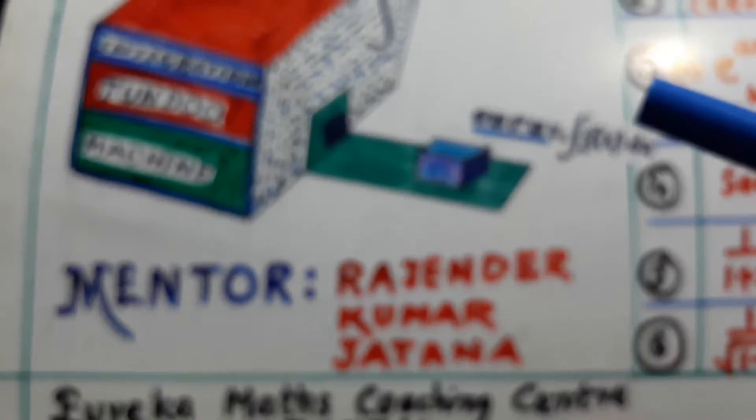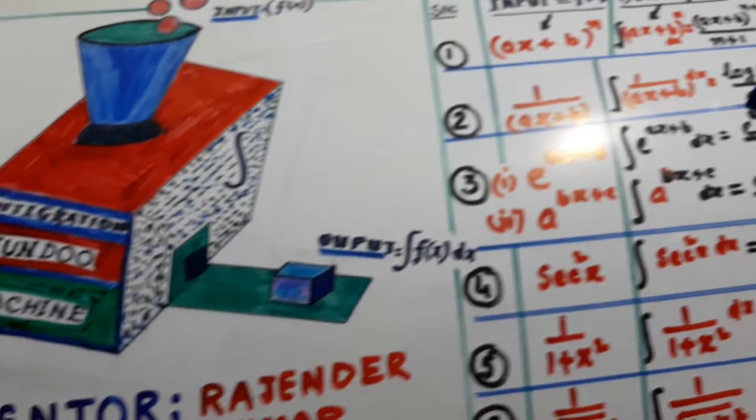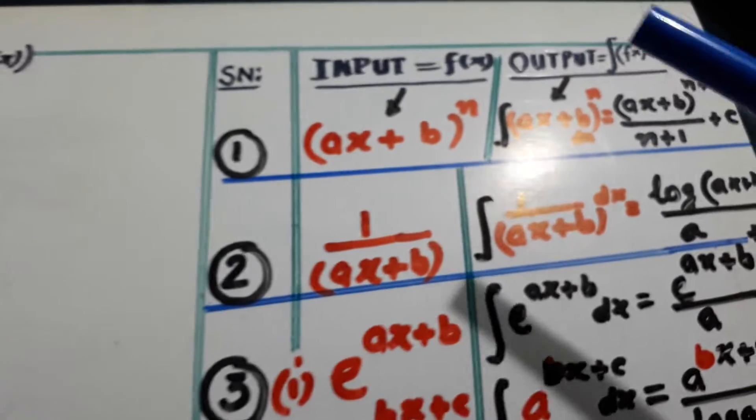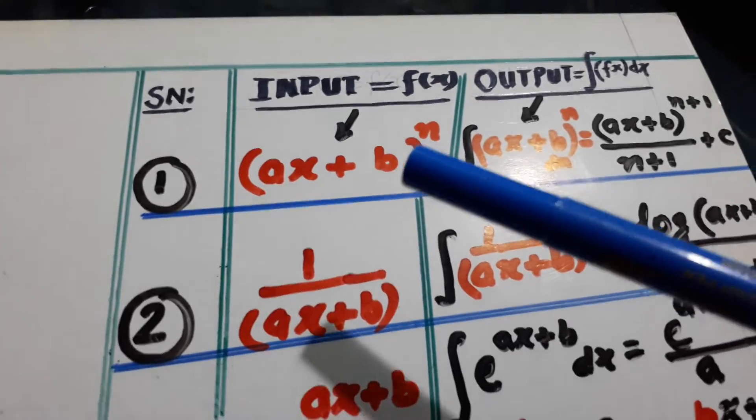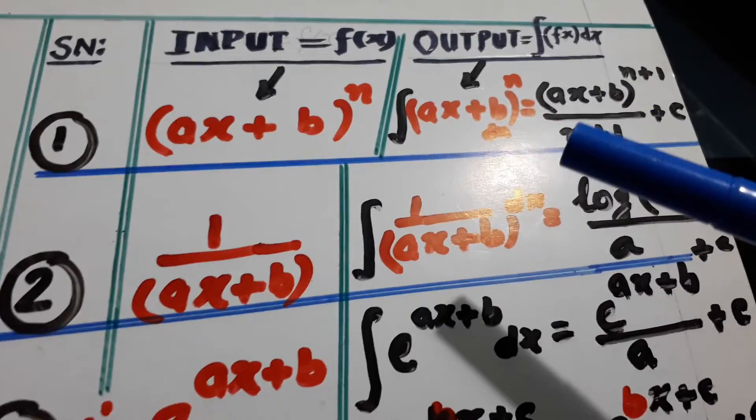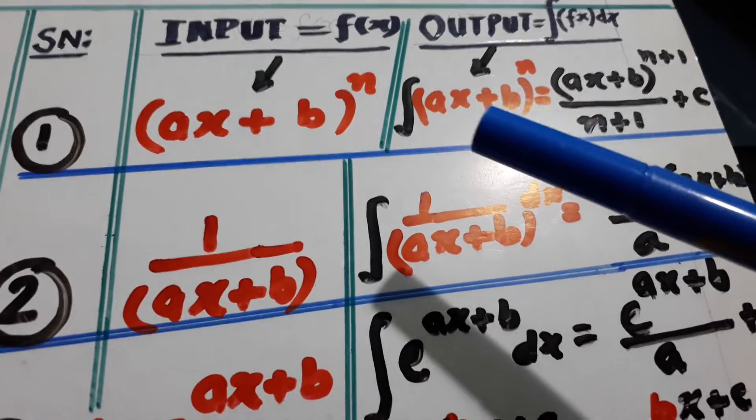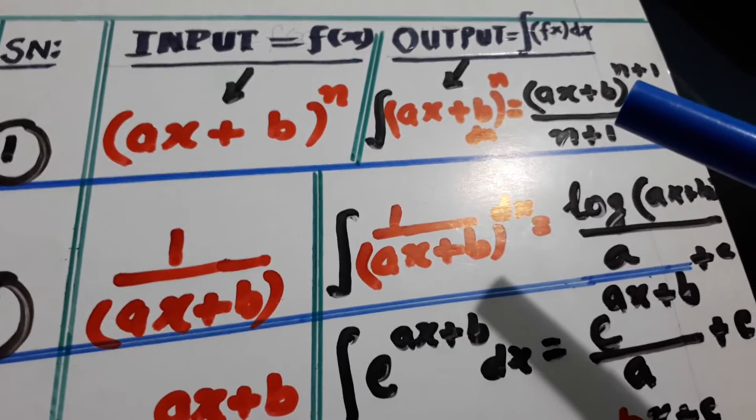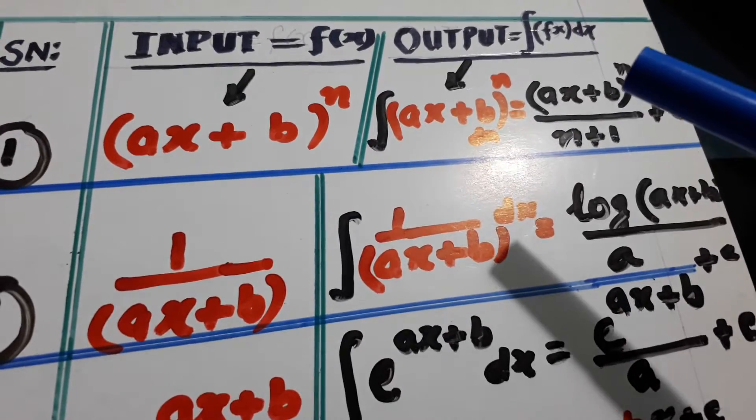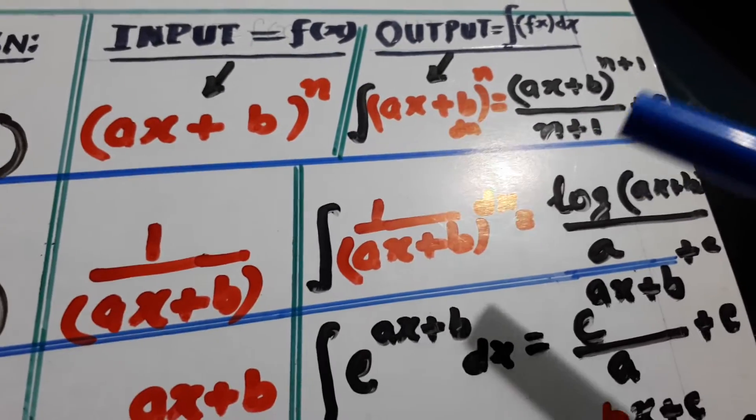So with the help of examples, I will make you understand. Input is (ax+b)^n. Output is integration of (ax+b)^n, and this is equal to (ax+b)^(n+1) over (n+1) plus c.